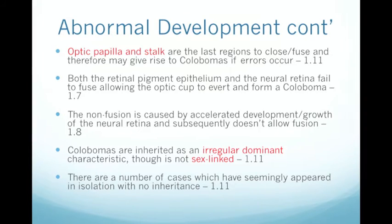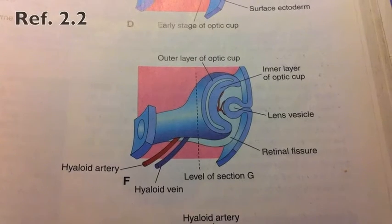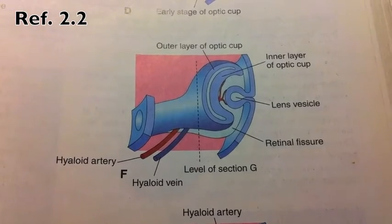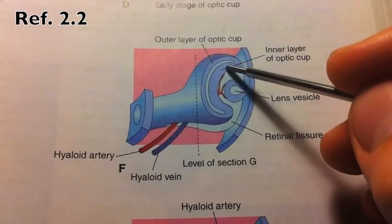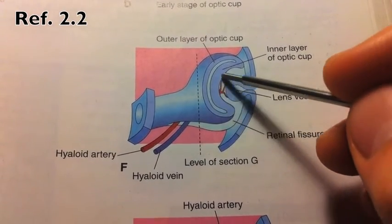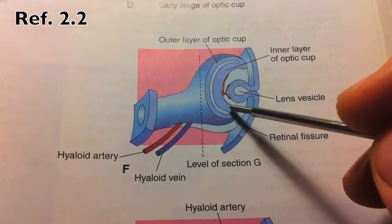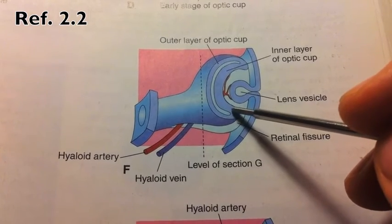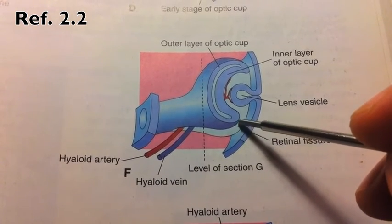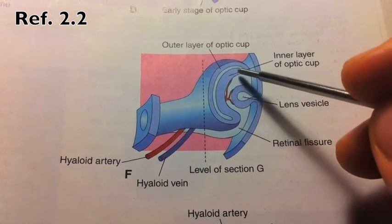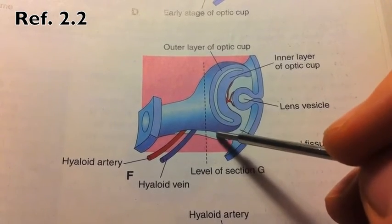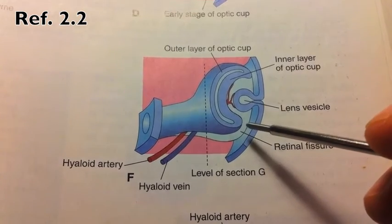Let's take a look at the consequences of accelerated growth of the neural retina. We have the inner thick layer known as the neural retina. In abnormal development, if it undergoes accelerated growth, that would prevent the retinal fissure from fusing. If this part grows faster, it fans outwards and wouldn't allow fusion at the retinal fissure.